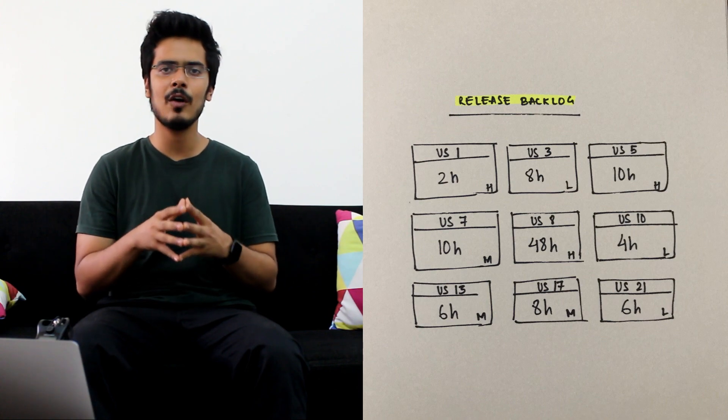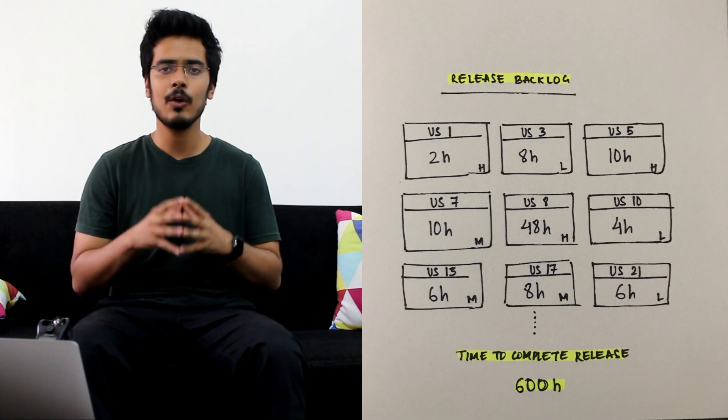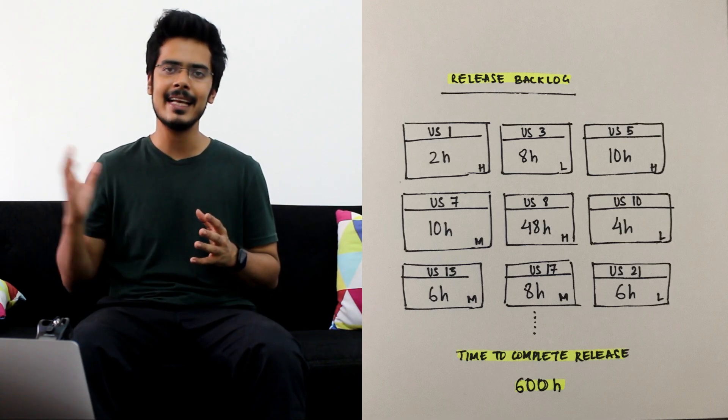This gives an indication of how much time it is going to take the team to finish each user story. And overall this tells us how much time is going to be required to complete the next release cycle.